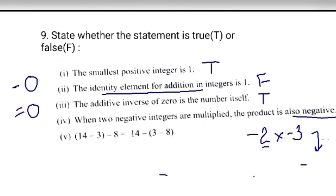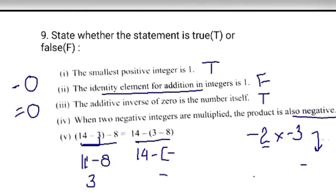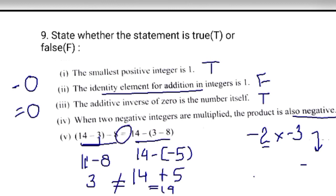Next: is 14 minus (3 minus 8) equals 14 minus 3 minus 8? Calculate left hand side: 14 minus (3 minus 8) equals 14 minus (minus 5) equals 19. Right hand side: 14 minus 3 minus 8 equals 3. They are not equal, so this is false. Students, we have completed Exercise 1D. Lots of practice is required — practice as much as possible. Thank you, have a good day.